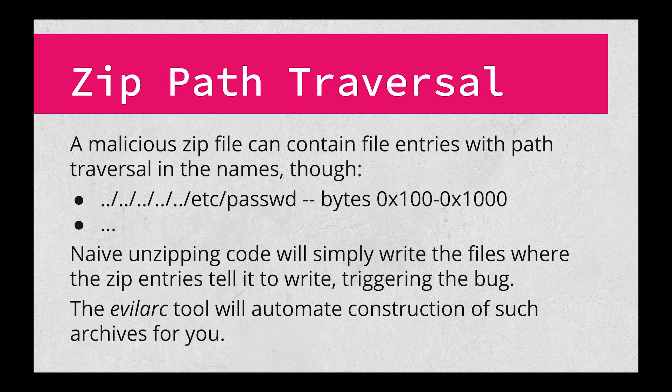However, it's possible to construct a malicious zip file with a relative path like "../../some_directory/file.txt". If an application doesn't check for this while unzipping the content, it's possible that an attacker can override critical files, just like in the previous kind of path traversal attack.